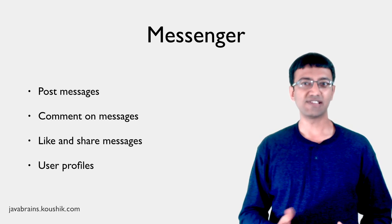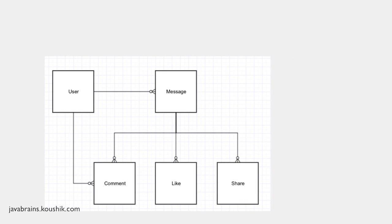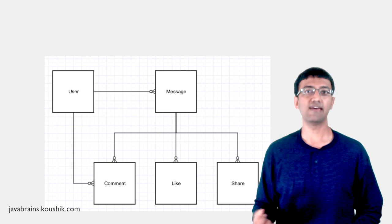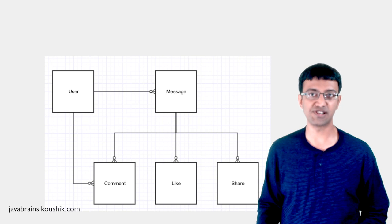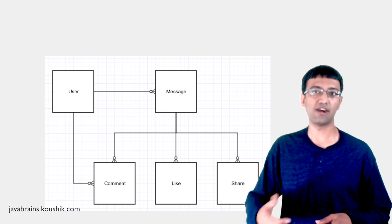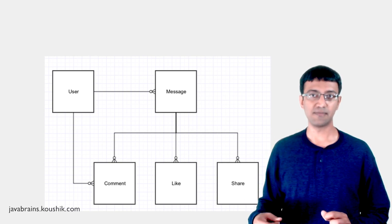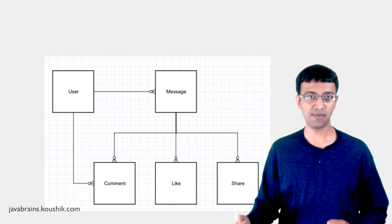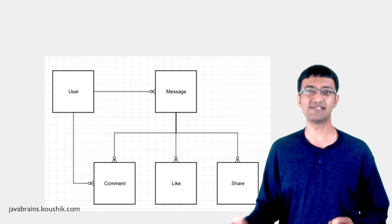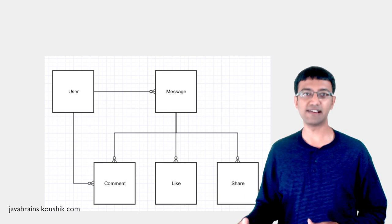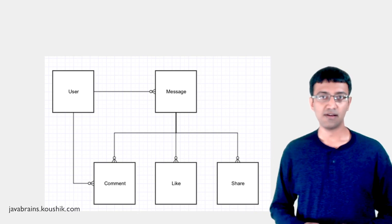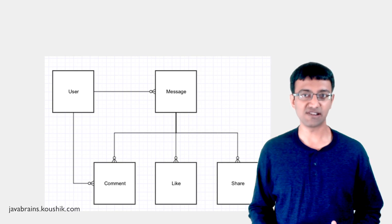This is a very simple application with a very simple ER diagram. You have a user table with user information and a messages table that contains all the messages anyone has ever posted. Each row of the message table refers to the user who posted it. And finally, comments and likes tables which refer to the message that's being commented or liked, and the user who has entered the comment or hit like is also referred to in the comments or likes table. It's a simple set of basic entities which are interrelated, and this is going to be the core of the Messenger application.